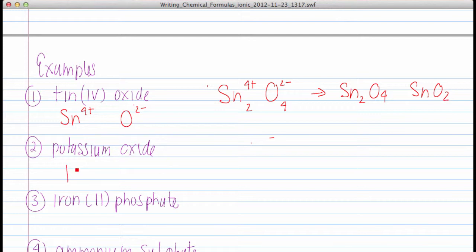Potassium oxide would be K plus 1. Oxide is 2 minus. So K plus 1 O 2 minus. Criss-cross would be 1 and 2. So my formula would be K 2 O.